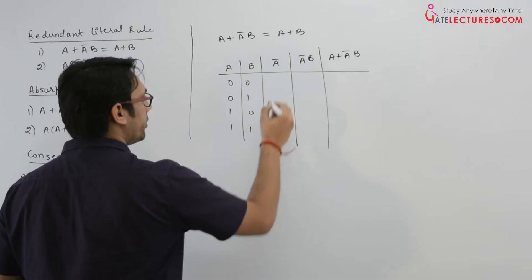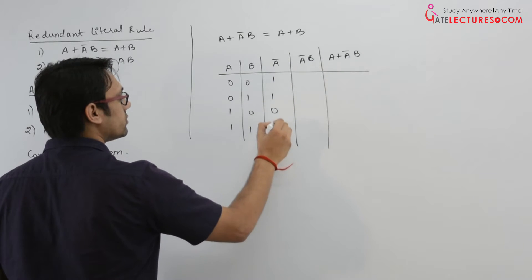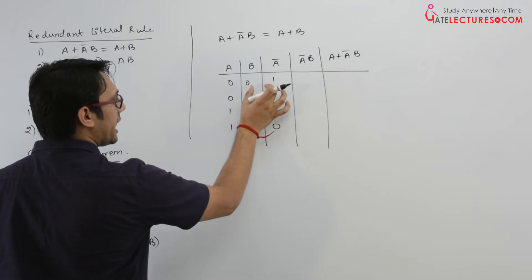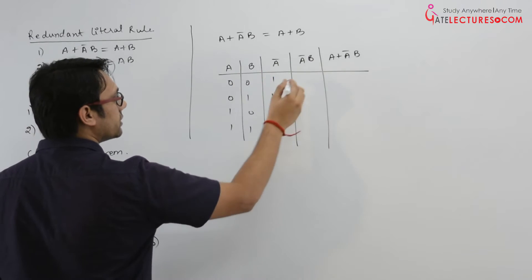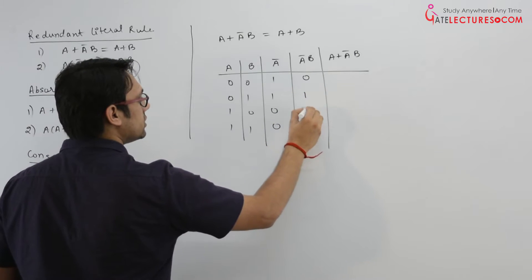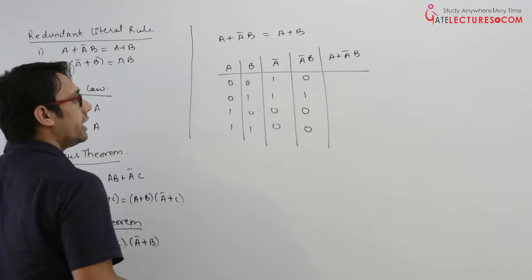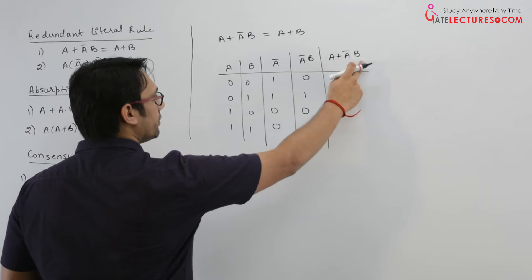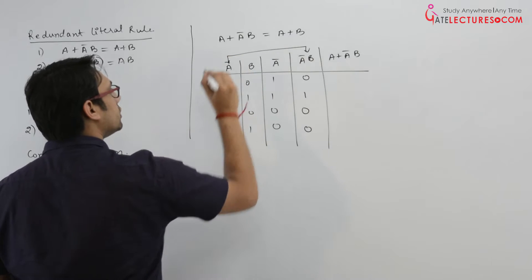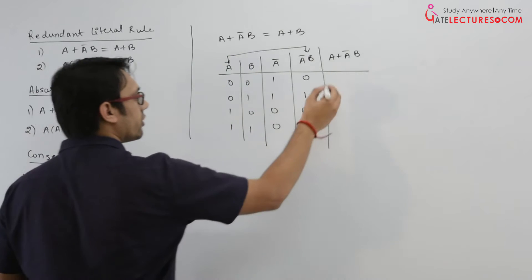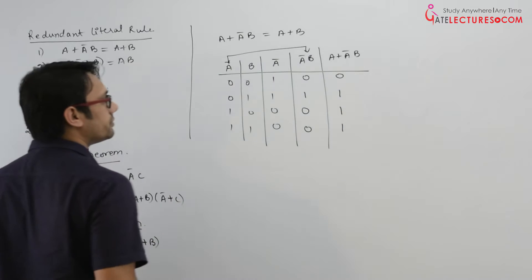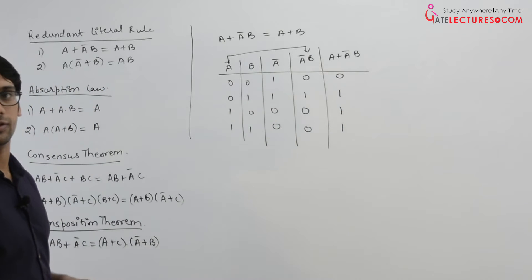A complement can be written as 1, 1, 0, 0. What is A complement B? We make AND of A complement and B, so their AND will be 0, 1, 0, 0. And then A plus A complement B means we apply OR between A and A complement B, so the OR will be 0, 1, 1, 1.